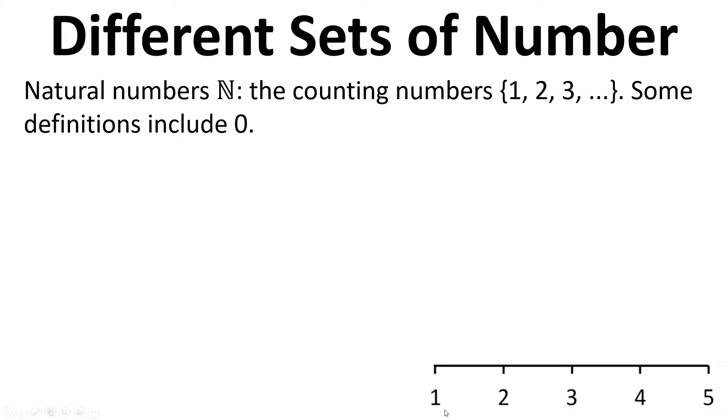On our number line, here we are: 1, 2, 3, 4, 5, and just going up. But we might also include 0, depending on which definition we are using.